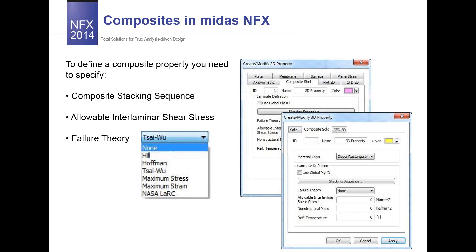Now let's focus on Midas NFX and the composite material feature inside the software. Composites in Midas NFX are supported for shell and solid elements, and all necessary parameters are defined via the presented windows. To define the composite you have to specify the composite stacking sequence, provide the allowable interlaminar shear stress (the bond shear allowance) — which must be specified if you want to calculate the factor of safety against shear failure between laminate panels — and specify the required failure theory, which can be selected from Kirchhoff, Tsai-Wu, and others.